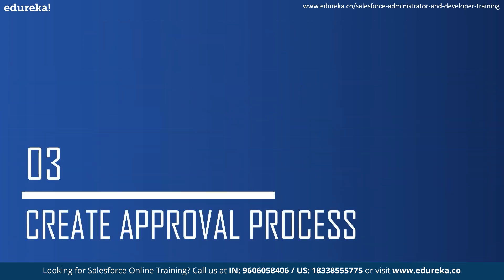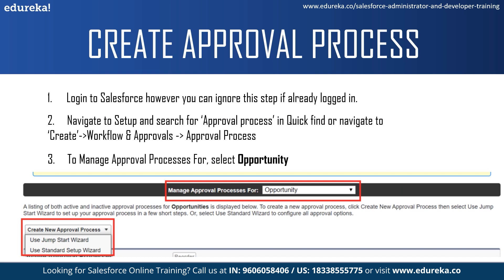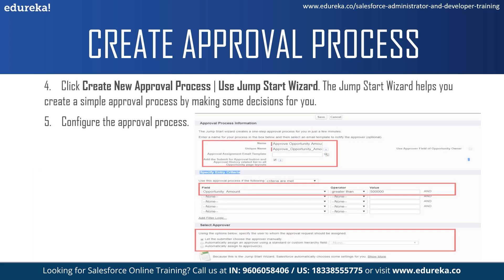Let's look at how to create an approval process in more detail. First, log into Salesforce. Second, navigate to Setup and search for 'Approval Process' in Quick Find, or navigate to Create, then Workflow and Approvals, then Approval Process. Third, go to Manage Approval Process and select Opportunity. Fourth, click 'Create New Approval Process' and you can click 'Use Jump Start Wizard,' which helps you create a simple approval process by making some decisions for you.